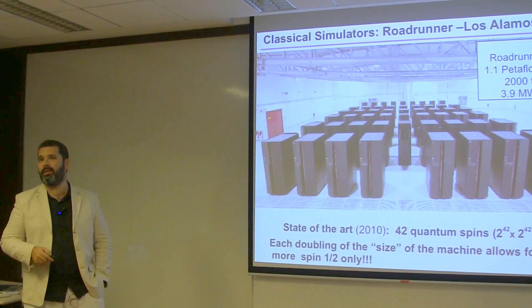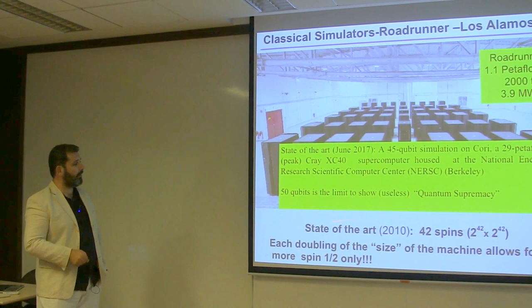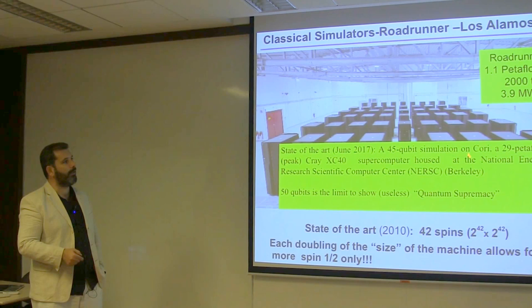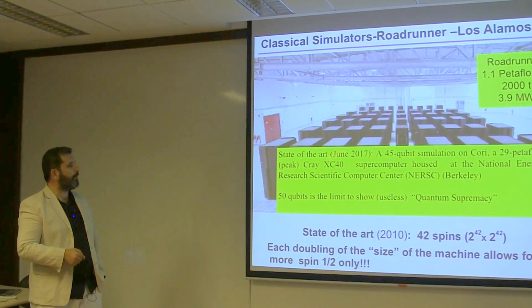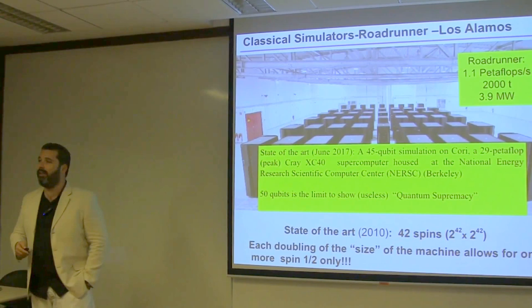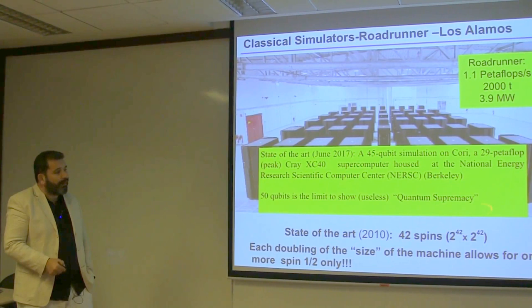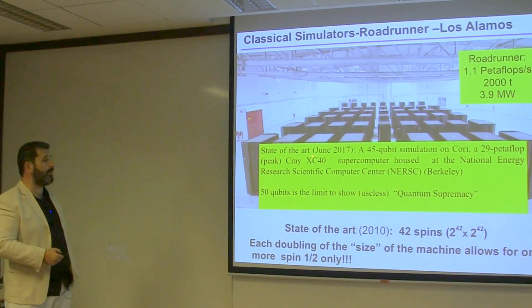By just adding one more spin, the Roadrunner would tell you it's not enough — you'd need another room or another Roadrunner. Seven years later, last month, on another supercomputer named Cori — 29 petaflops compared to 1.1 petaflops — they managed to run 45 spins, and it really seems that's the borderline. There's a statement that by 50 spins, there's nothing any classical machine could ever simulate.